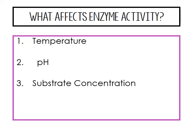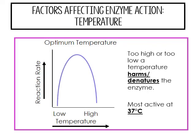There are three things that will affect an enzyme's activity: temperature, pH, and substrate concentration. Looking at the graph, the reaction rate increases as temperature increases, but the optimal temperature is 37 degrees Celsius — that's 98.6°F, your body temperature. So enzymes in your body are most active at body temperature. If you have a fever or hypothermia, they won't work as well, causing the enzyme to denature.